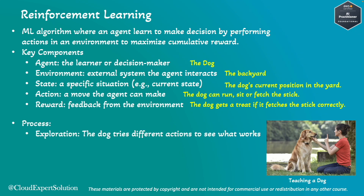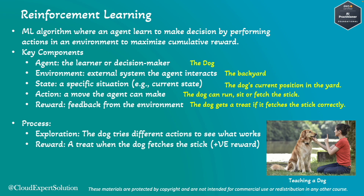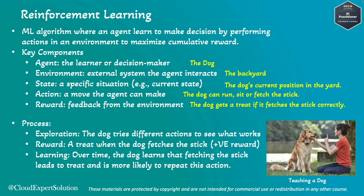In this process, the first phase is exploration — when the untrained dog tries different actions to see what works. The second phase is reward — a treat is given if the dog fetches the stick, which is a positive reward. The third phase is learning — a continuous process where over time the dog learns that fetching the stick leads to a treat, and it is more likely to repeat that action.